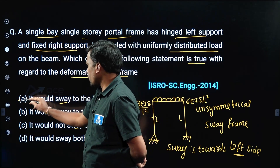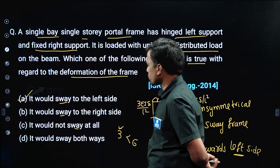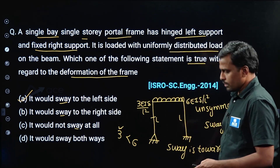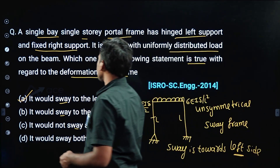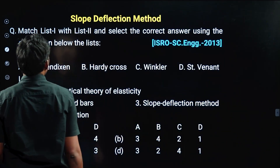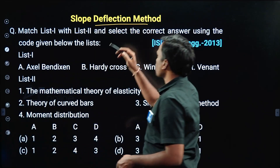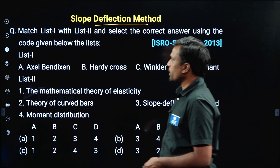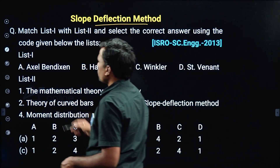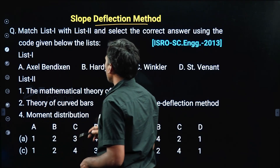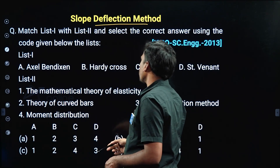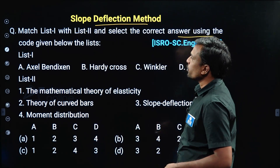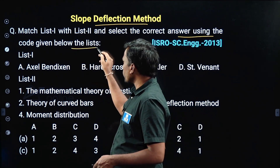Next question is from the Slope Deflection Method chapter. Match List 1 with List 2 and select the correct answer using the code given below.